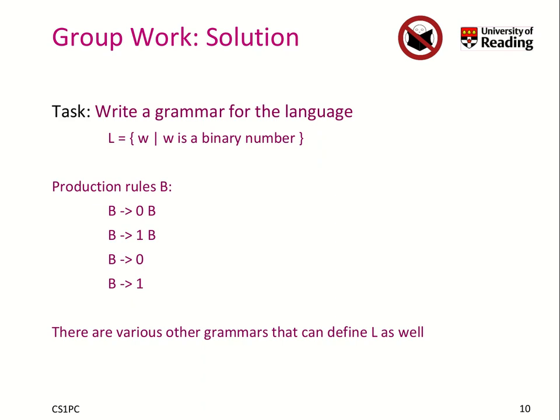Now we want to generate more than a single-digit binary number — we want arbitrary long binary numbers. So we recursively repeat the rule: B generates zero, or B generates one and then B again. This way, to generate '000', you apply this rule to get a zero, apply it again for another zero, and a third time for the third zero — you can generate arbitrary long strings. We see the concept of recursion here again. There are many grammars that can define the same language, but this is a rather easy one.